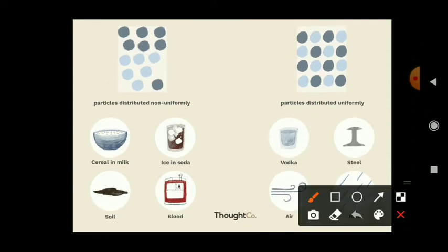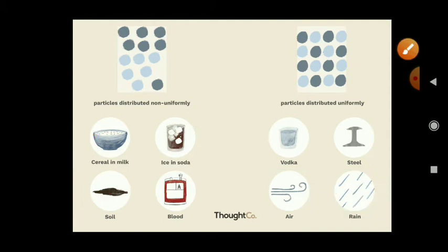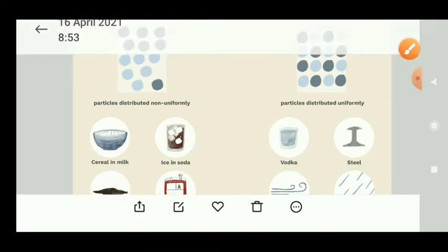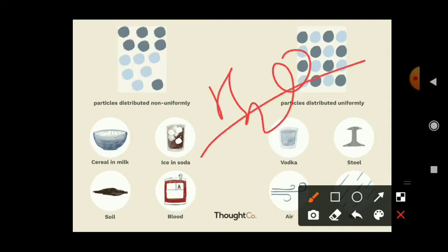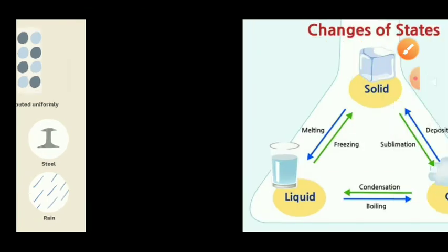Examples of heterogeneous mixtures include cereal in milk, ice in soda, soil, and blood. Examples of homogeneous mixtures include vodka, steel (a composition of iron, carbon, and sometimes chromium), and air — where all gases are mixed uniformly and distributed throughout.